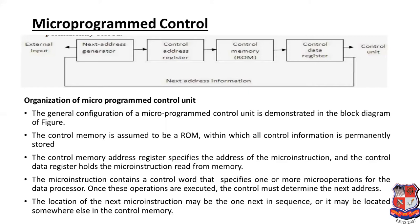The control memory is assumed to be ROM, within which all control information is permanently stored. The control memory address register specifies the address of the micro instruction, and the control data register holds the micro instruction read from memory. The micro instruction contains a control word that specifies one or more micro operations for the data processor. Once these operations are executed, the control must determine the next address — the location of the next micro instruction may be the one next in sequence or may be located somewhere else in control memory.